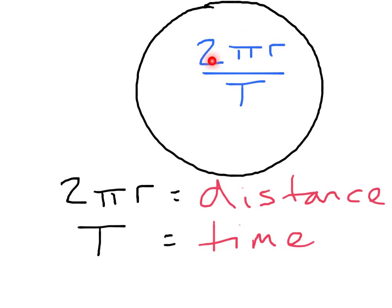The speed of our object going round in the circle is going to be 2 pi r divided by T. So, that's just using speed equals distance over time. That's the distance it travels in that time. T period 2 pi r, the distance round the circle.